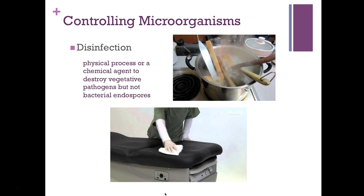Disinfection is a physical process or use of a chemical agent to destroy the vegetative pathogen but not bacterial endospores. Vegetative means active — bacteria can take their genetic information, create an endospore, and go into a dormant phase, hanging out in harmful environments until conditions improve. Disinfection also helps remove toxins and is used when removing pathogens from inanimate objects like food utensils, such as boiling wooden utensils in a pot.